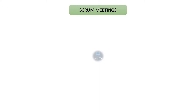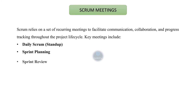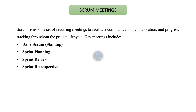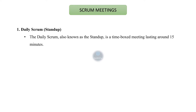The next topic is Scrum meetings. Scrum relies on a set of recurring meetings to facilitate communication, collaboration, and progress tracking throughout the project life cycle. Key meetings include the daily Scrum, also called stand-up, sprint planning, sprint review, and sprint retrospective. The daily Scrum is a time-boxed meeting lasting around 15 minutes.